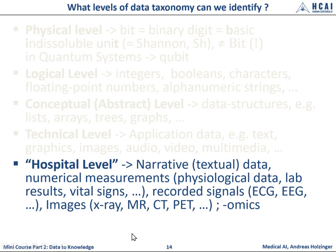At the hospital level, we have narrative textual data — text is a very important part of biomedical processes; it is the legally binding communication between professionals. Then we have numerical measurements such as physiological data, lab results, and vital signs. We have recorded signals: ECG, EEG, and so on. Then a lot of images ranging from X-ray to CT and MRI. And then the broad range of omics data.